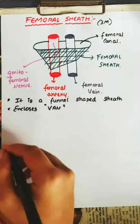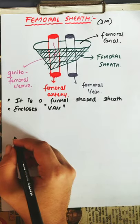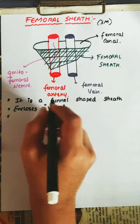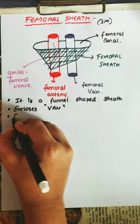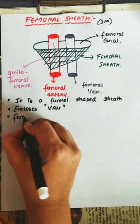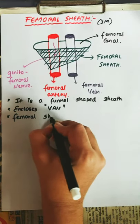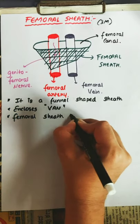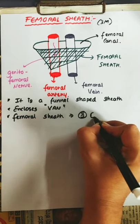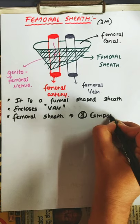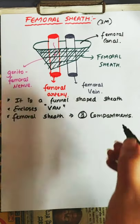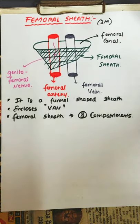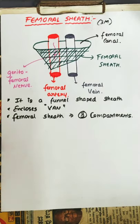The femoral sheath is divided into three compartments — you have to know this. We'll study those compartments with the help of a diagram so that we can understand it in a better way.